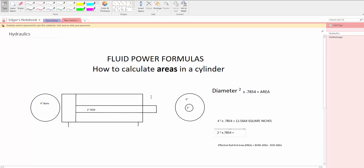Now then you go back to the rod and you look at the rod. The rod is a 2 inch rod. You have 2 squared times 0.7854. And that is equal to 3.1416.